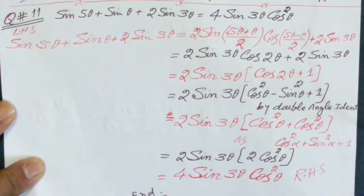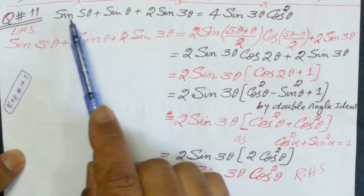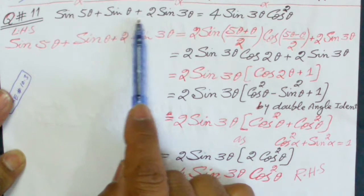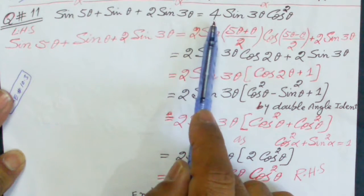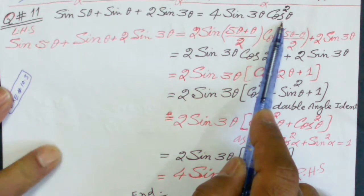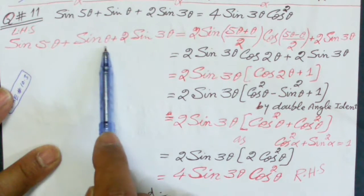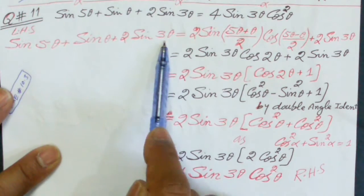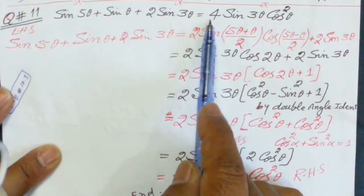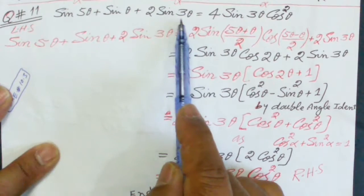Question number 11, exercise 10.3. The question is: convert sine of 5 theta plus sine theta plus 2 sine 3 theta into 4 sine 3 theta cosine theta whole squared. On the left hand side we have sine 5 theta plus sine theta plus 2 sine 3 theta. To convert, there are three terms, and we need to select sine 3 theta as the target single term.